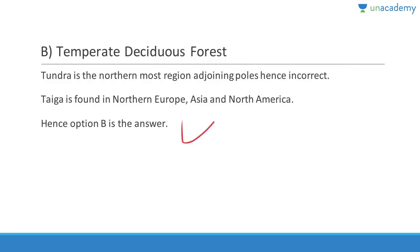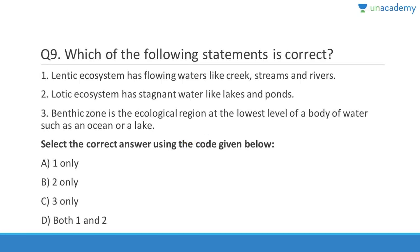Question nine: Lentic ecosystem has flowing waters like creeks, streams, and rivers — that is wrong; lentic has stagnant water like lakes and ponds. So both statements one and two are wrong. Answer is C, three only. The benthic zone is the lowest level of a body of water such as an ocean or a lake. They have reversed the lentic and lotic definitions.